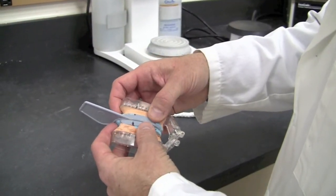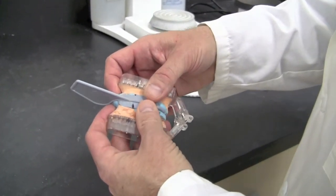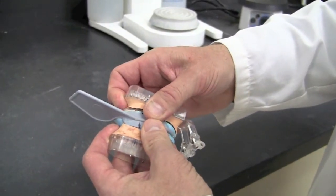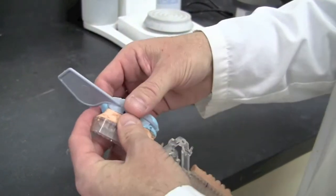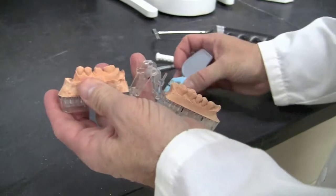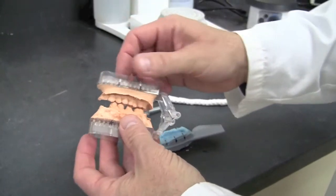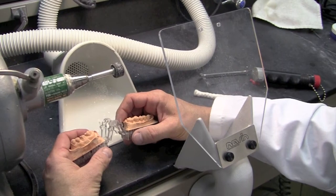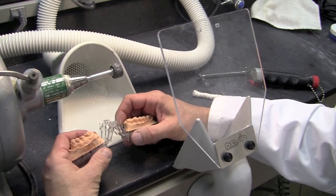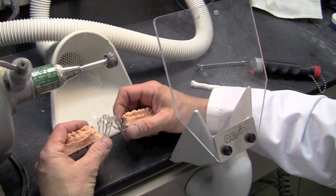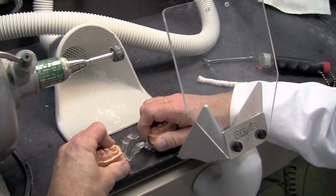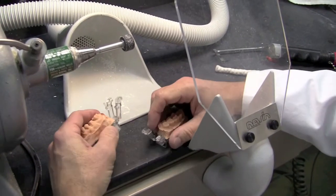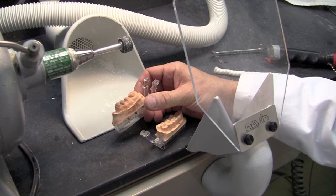Now it's time to separate our articulator sections from the impression. Just simply pull gently on both sides. The trimming process will be easier if both sections of the articulator are separated. Just gently put it on the table and pull. Now we're ready to begin the trimming process.